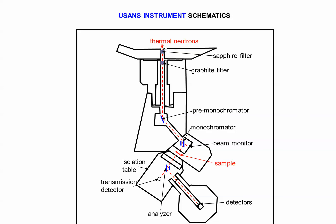The USANS instrument, schematics, there you go. And thermal neutrons, you have a pre-monochromator, and then triple bounce monochromator, silicon. A sample here, and then an analyzer, also triple bounce, and then detection here.